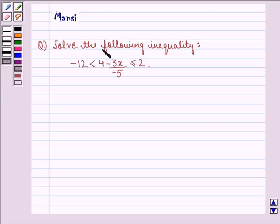The question says solve the following inequality: -12 < 4 - 3x/-5 ≤ 2.